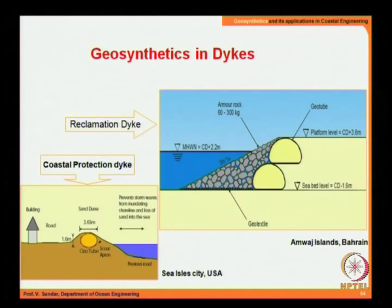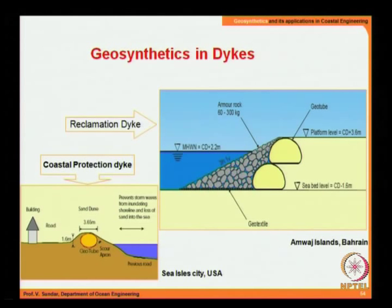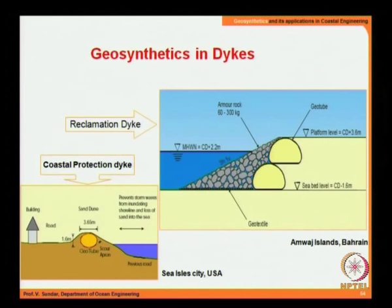For example, in Bahrain, geotube has been used to retain earth while also resisting the action from the water side. In yet another coastal protection condition, a dike is constructed using a geotube. The elevation of the dike goes up because of this, protecting the land side, and the elevation can be appropriately fixed to avoid inundation.